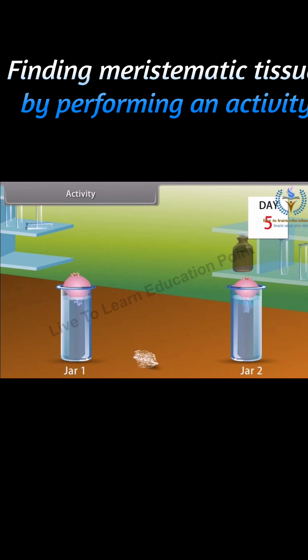This activity proves that growth of plants occurs only in certain specific regions, because the dividing tissue, also known as meristematic tissue, is located only at these points.